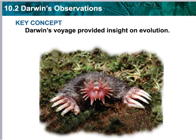The essential question is going to be the key concept. Darwin's voyage provided insight on evolution. The main topic is Darwin's observations. Your name and date need to be written at the top of the Cornell note.